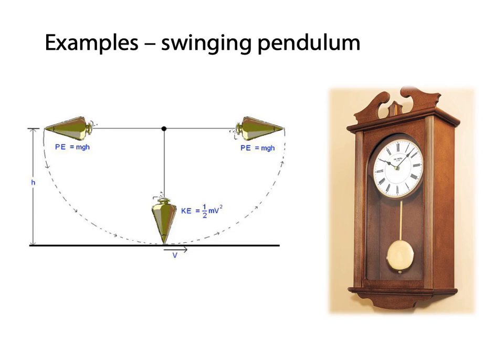The pendulum, if it's an undamped pendulum, if it's just swinging backwards and forwards, will always be trading potential energy to kinetic energy and then back to potential energy. We'll look at that in more detail later.